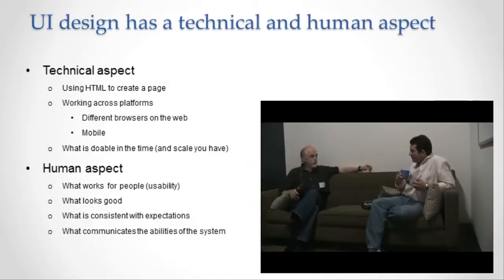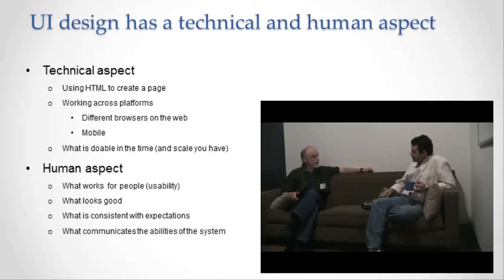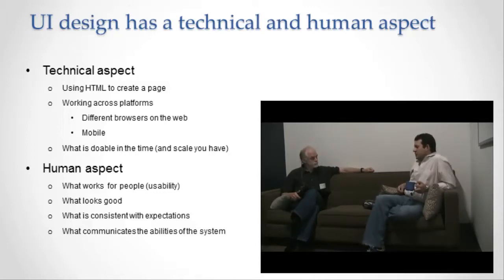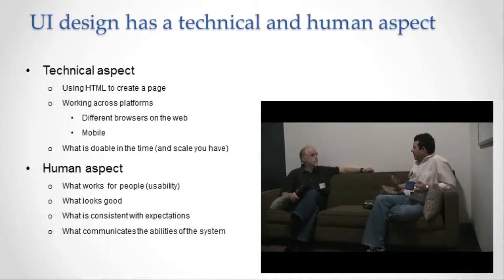Facebook has a user interface laid out on the screen and different screen areas have different content in them. How is that managed — how does the system decide what goes where on the page? At the most superficial level, we use HTML tables to determine the layout of the page. We have a bunch of UI engineers and designers who are really skilled in the art of HTML layout in a way that renders quickly and behaves efficiently in your browser.